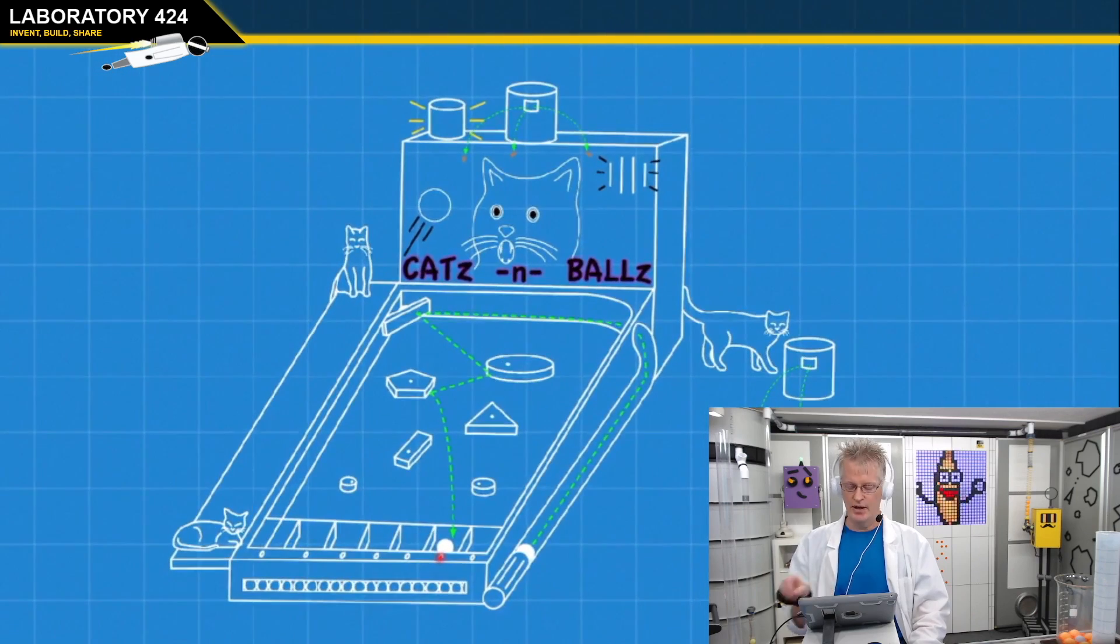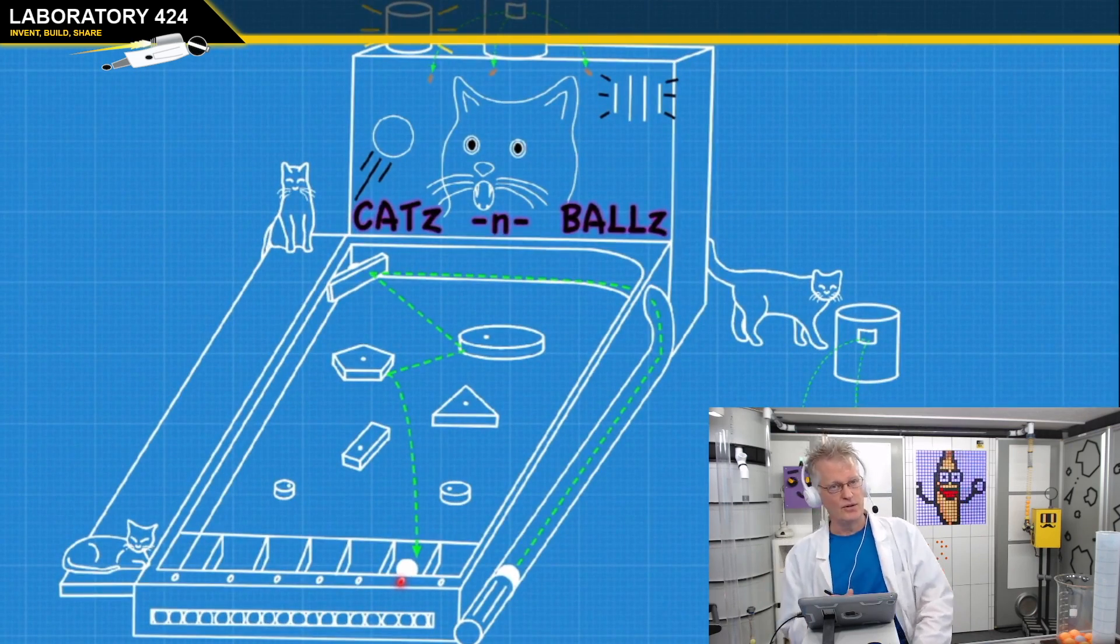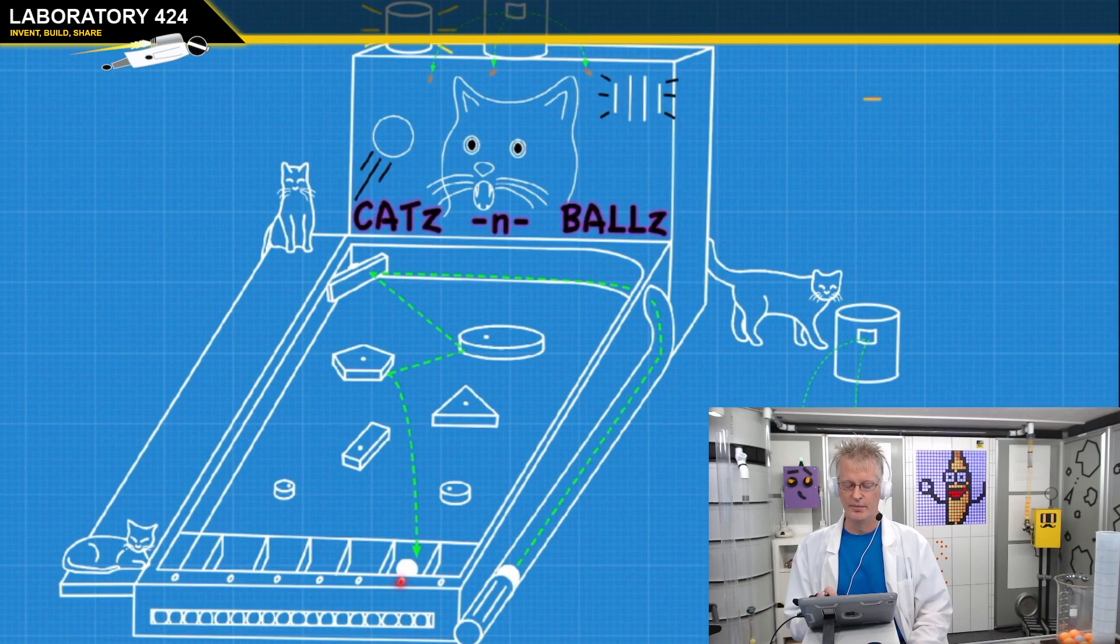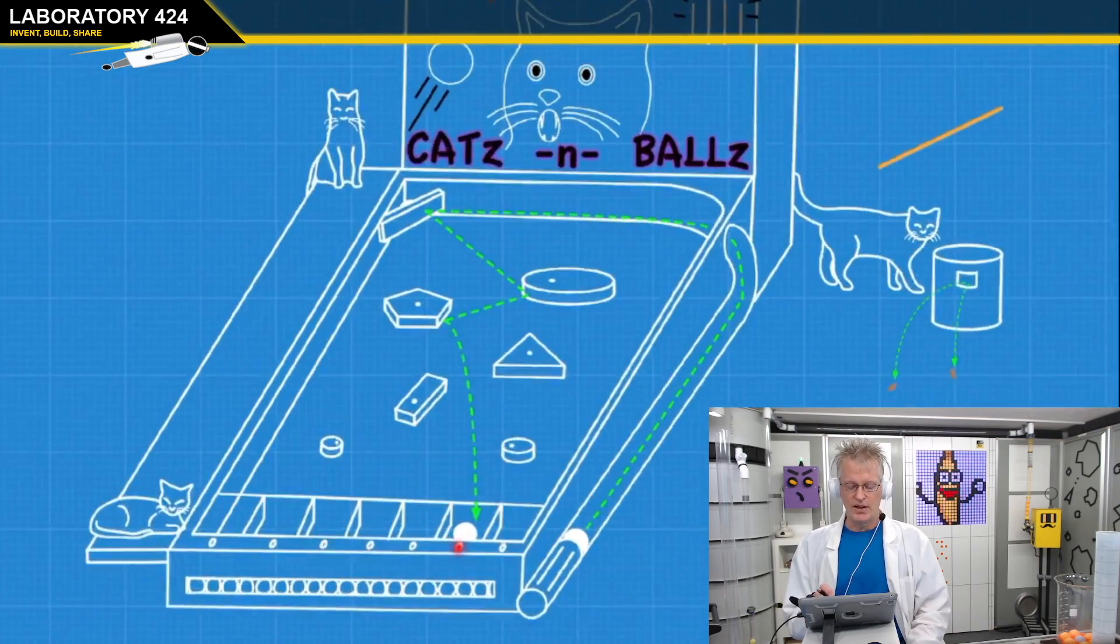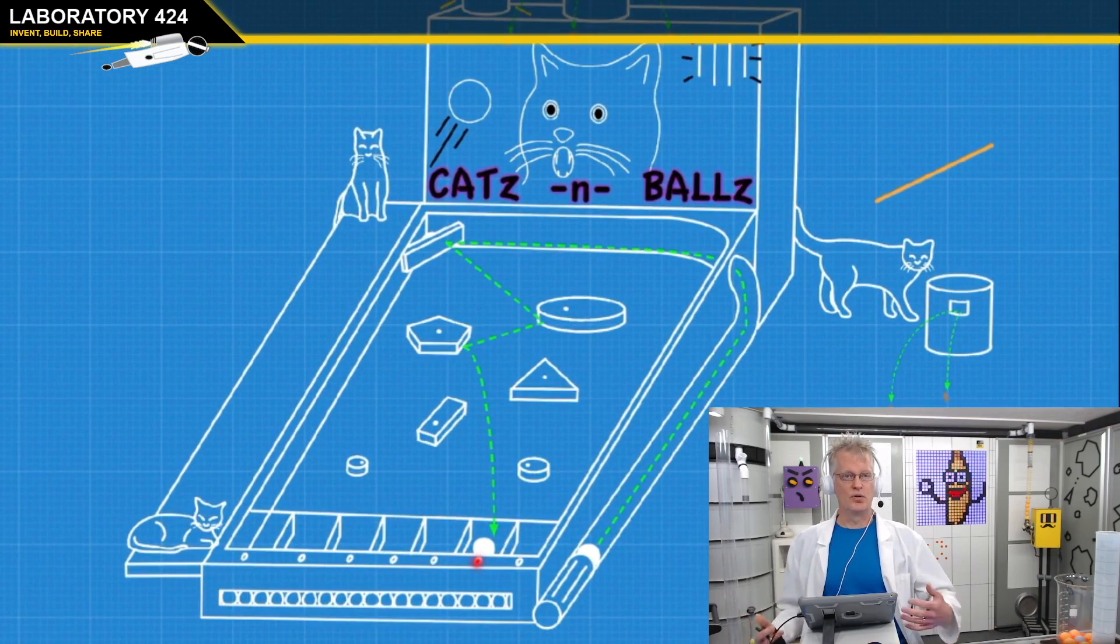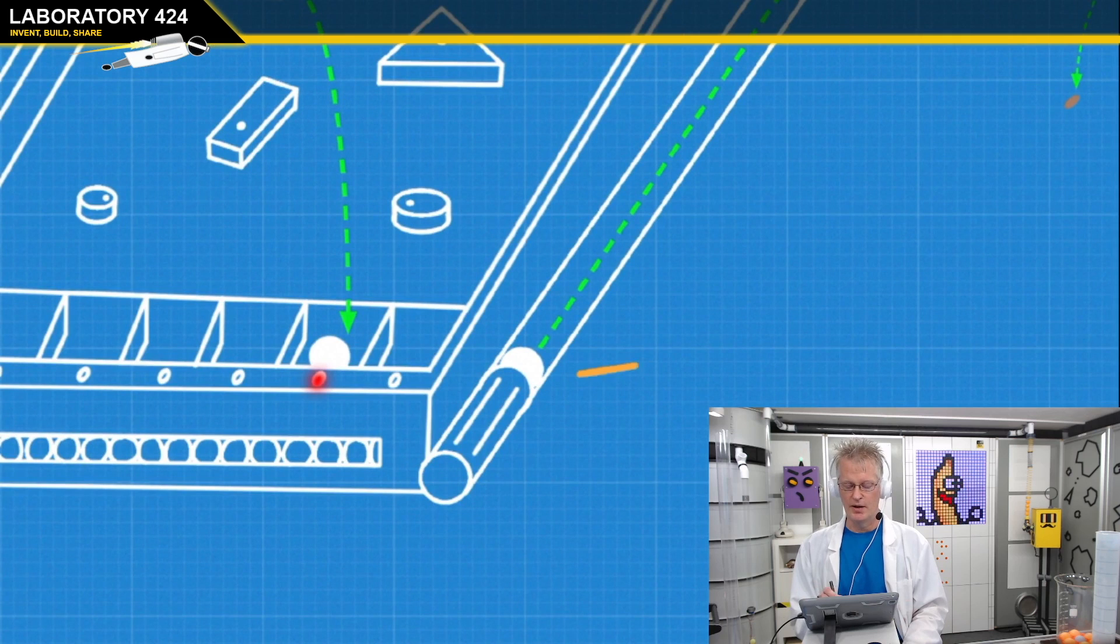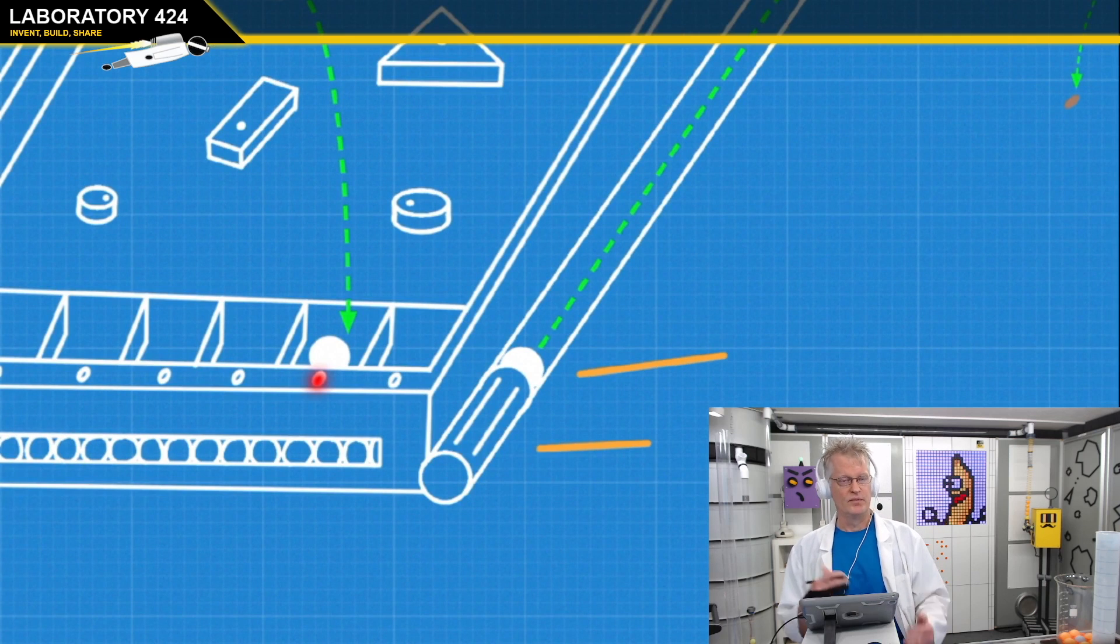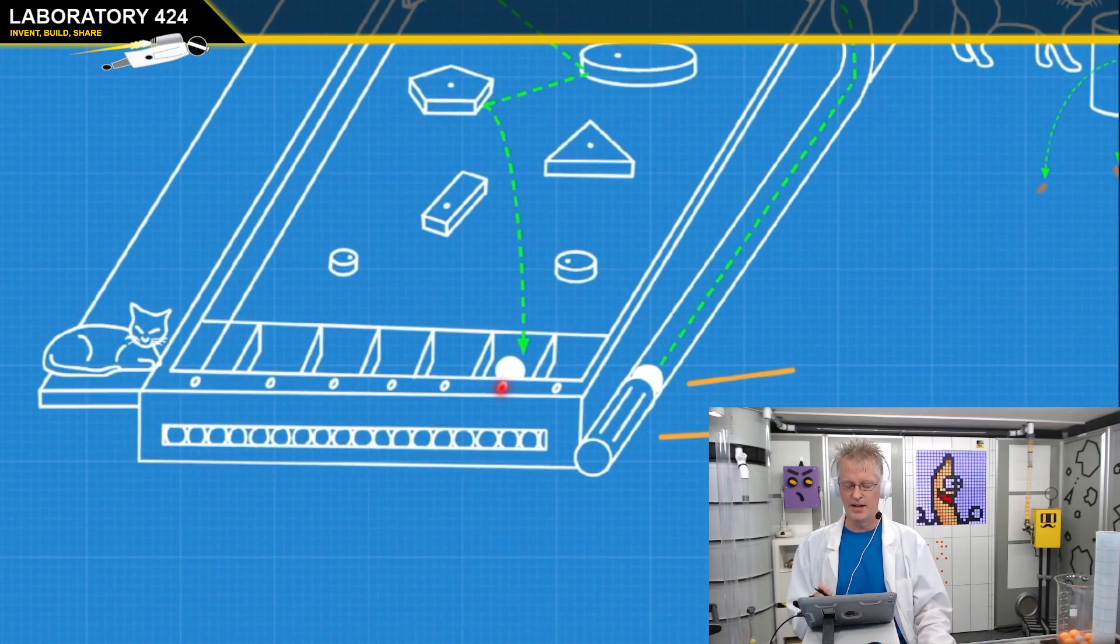So here's a concept I sketched up, and yeah, I'm calling it Cats and Balls, or you can probably come up with a better name. So let's talk about the main components other than the cats. It's an interactive chat-controlled or viewer-controlled pinball machine where they can launch balls. This is the launch mechanism, it could be kinetic, some kind of spring system.